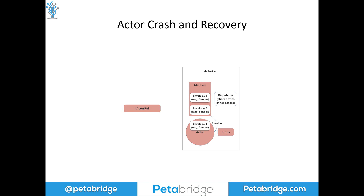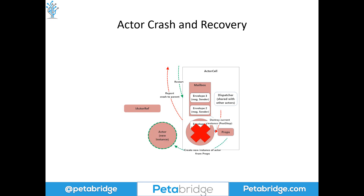When an actor restarts as a result of a crash, here's what actually happens. Let's suppose this actor was processing a message, and that message had a null property in it that caused this actor to throw a null reference exception. The actor cell will automatically report this failure back to this actor's parent. That parent will issue a decision on how to handle this child's failure, and by default that's going to be a restart directive. What the actor cell is going to do is garbage collect the current instance of the actor that you programmed — it'll destroy it and tear it down. All of the actor's internal state will be wiped out, but none of the messages in the actor's mailbox will be lost, because they're housed inside a separate data structure that is distinct from the actor. What will happen next is we're going to use the props that were used to originally start this actor to create a brand new instance of that actor.